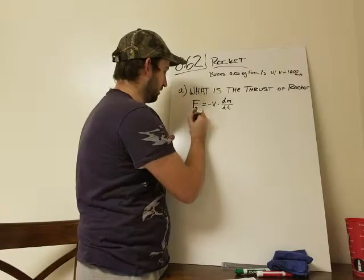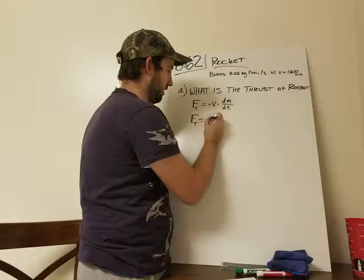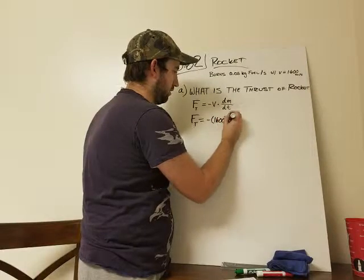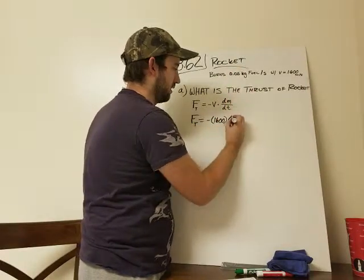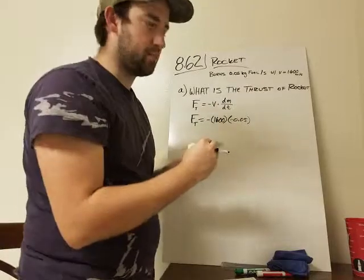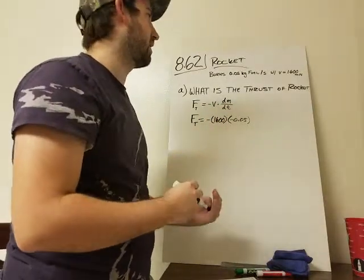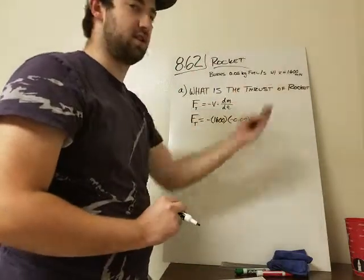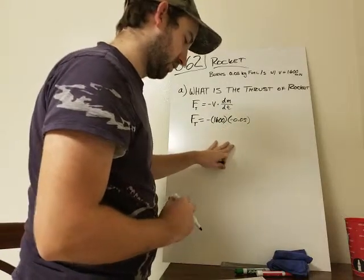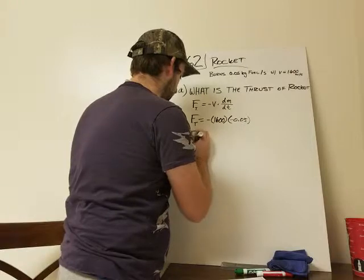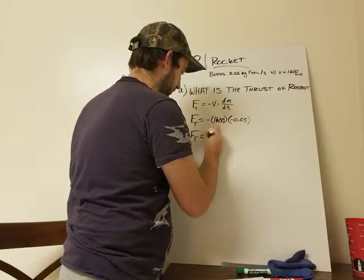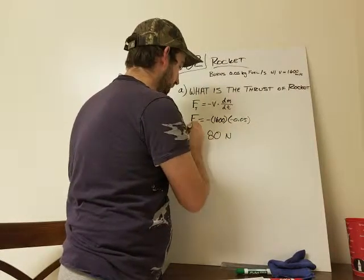All we need to do is plug in the values. So we have negative 1,600, and then this is just negative 0.05. And it's negative because that mass is depleting. So it's a negative amount as it's being converted into that gas through combustion. So when we plug that into our calculator, we end up getting that the force of thrust equals 80 newtons.